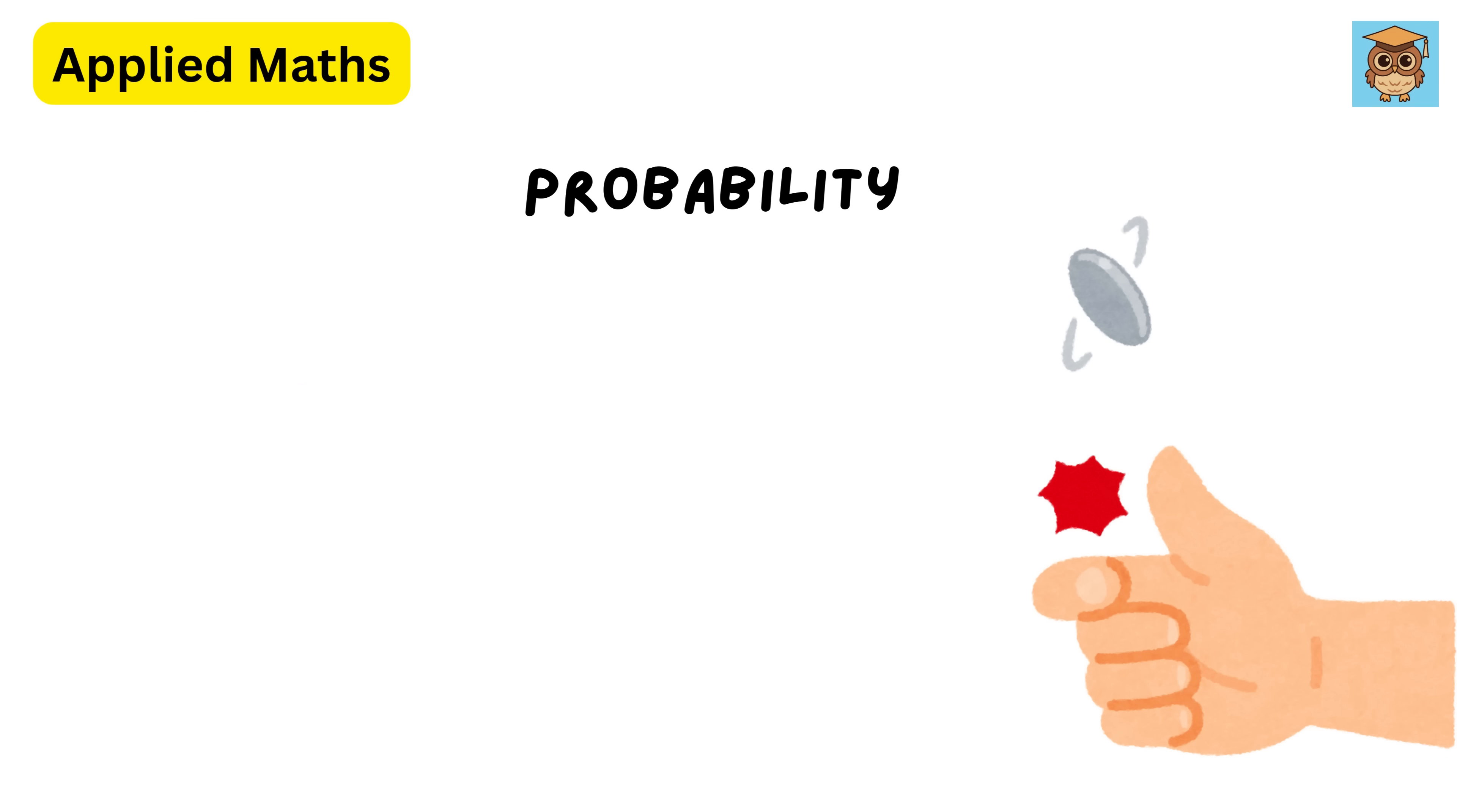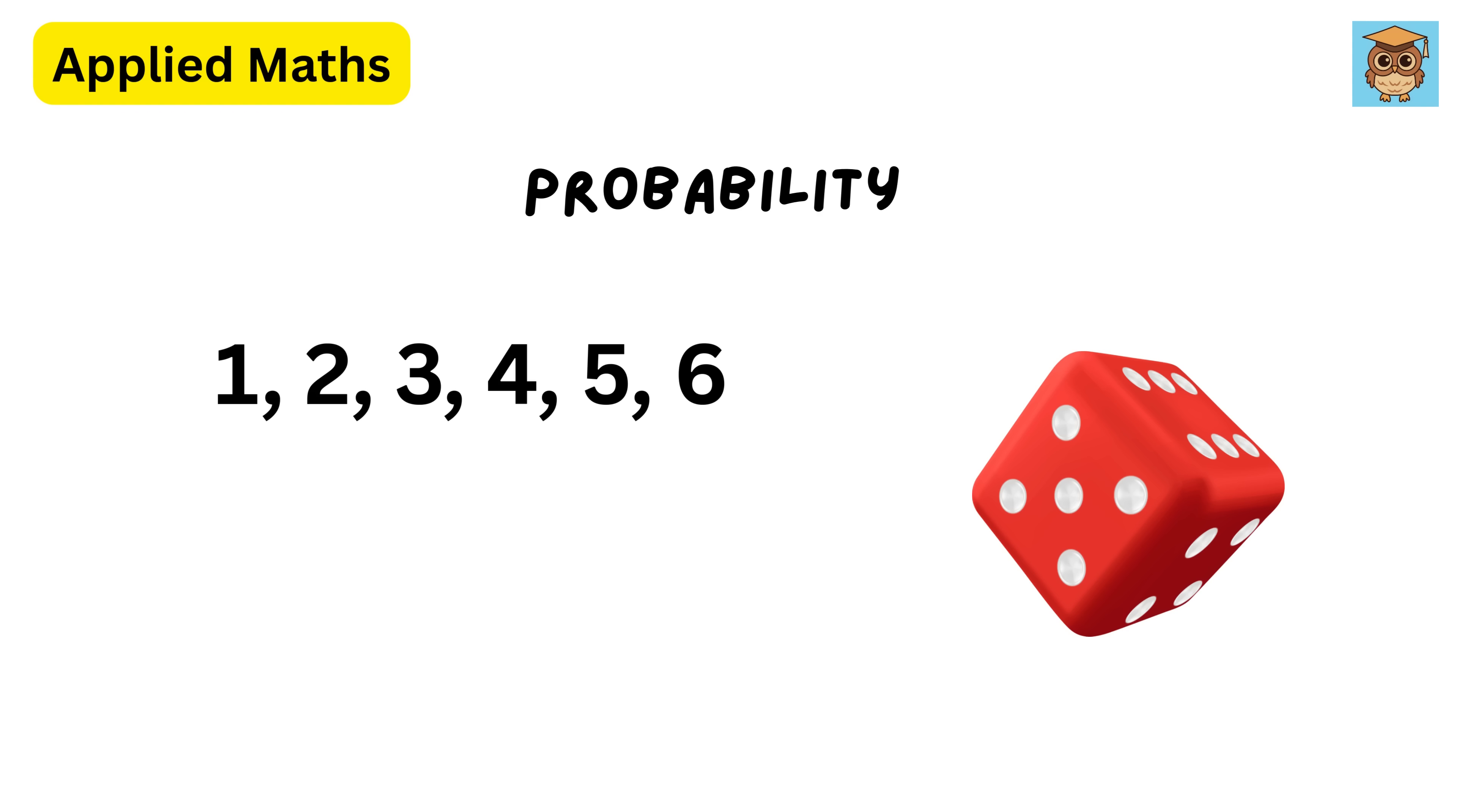If you flip a fair coin, there's an equal chance of getting heads or tails. Each has a probability of half. If you roll a fair dice, the chance of landing on any number one to six is one out of six.